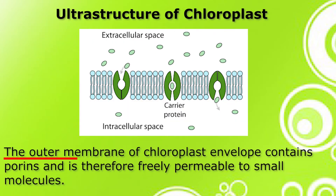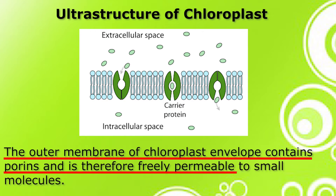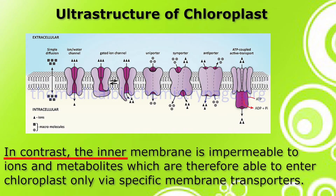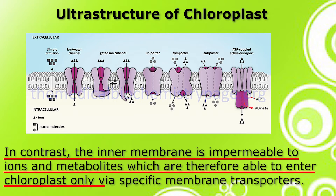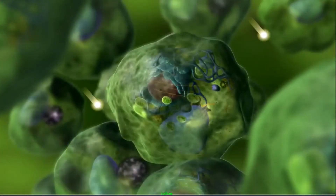The space present between the two membranes is called the periplastidial space, having a thickness of 25 to 75 Angstroms. The outer membrane of the chloroplast envelope contains porins and is therefore freely permeable to small molecules. In contrast, the inner membrane is impermeable to ions and metabolites, which are therefore able to enter chloroplasts only via specific membrane transporters. The stroma is the inner matrix of chloroplasts, which fills the inner hollow space.